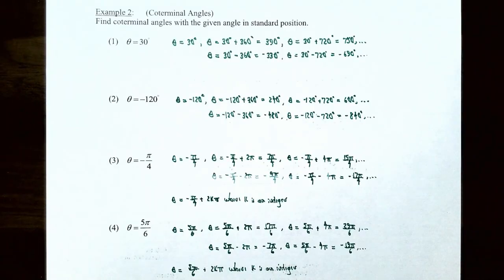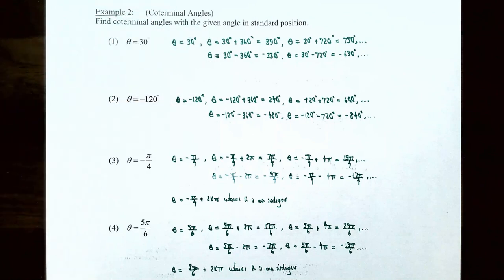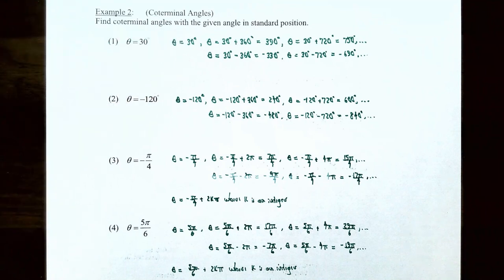Example two: coterminal angles. Find coterminal angles with the given angle in standard position. Number one, theta is 30 degrees. Coterminal angles share the same terminal side. Adding one full turn counterclockwise — that is, adding 360 degrees — gives 390 degrees. Adding two revolutions gives 30 plus 720 equals 750 degrees. Both 390 degrees and 750 degrees are coterminal with 30 degrees.